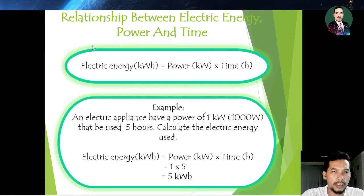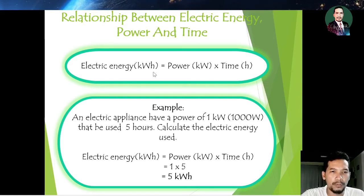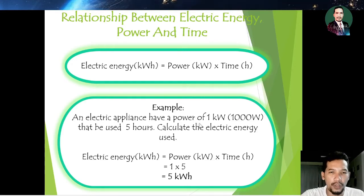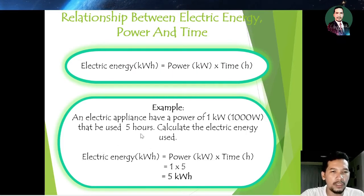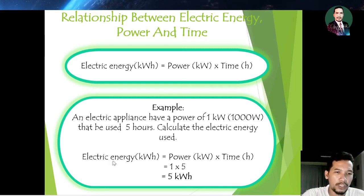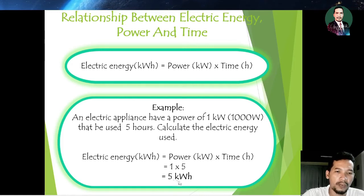Next is the relationship between electrical energy, power, and time. Electrical energy in kilowatt-hours equals power in kilowatts times time in hours. For example, an electrical appliance with a power of one kilowatt, which equals 1000 watts, is used for five hours. The electrical energy used is power times hours: one times five equals five kilowatt-hours.